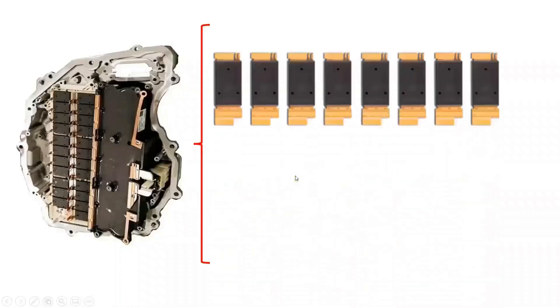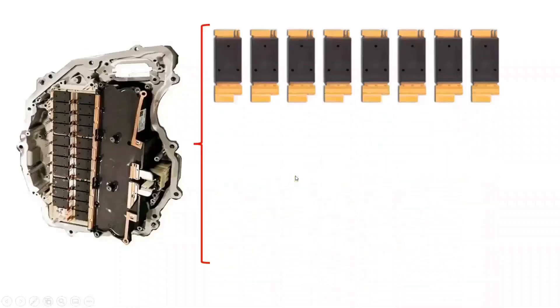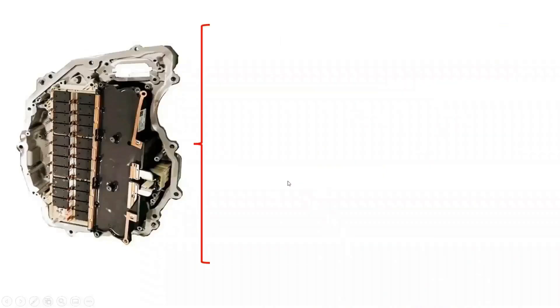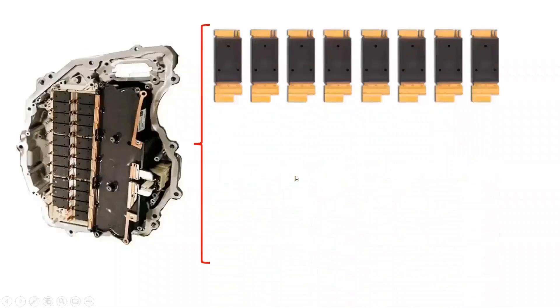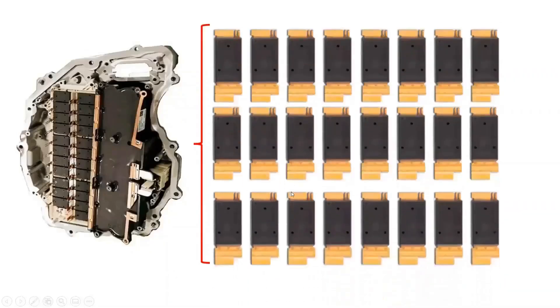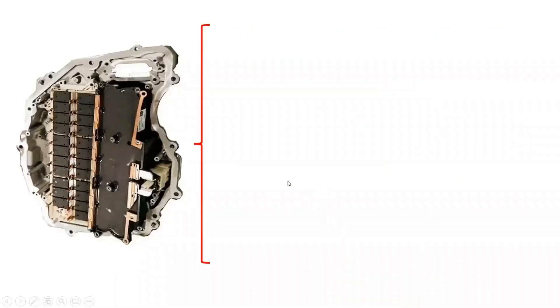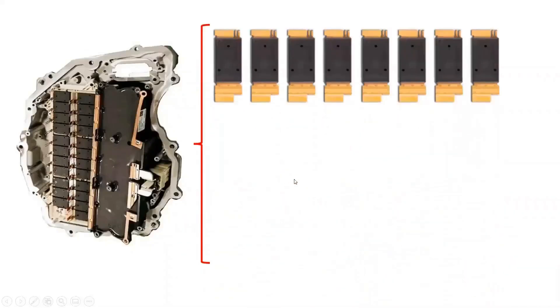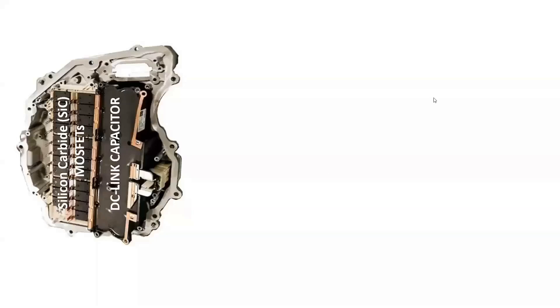This is the same inverter topology as a Tesla Model 3, which consists of 24 silicon carbide MOSFETs from STMicroelectronics with a custom package designed for it. Each of the silicon carbide MOSFETs is rated at 650 volts and 100 amperes. The Tesla Model Y uses a 3-phase 2-level inverter topology with an input battery voltage of 400 volts.